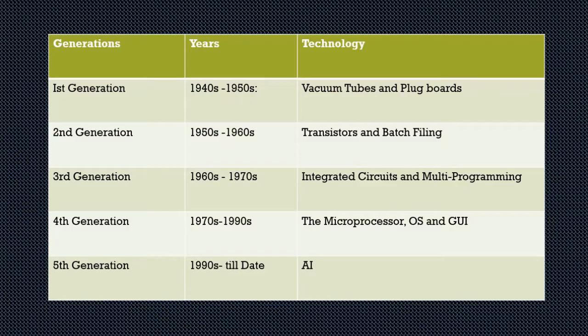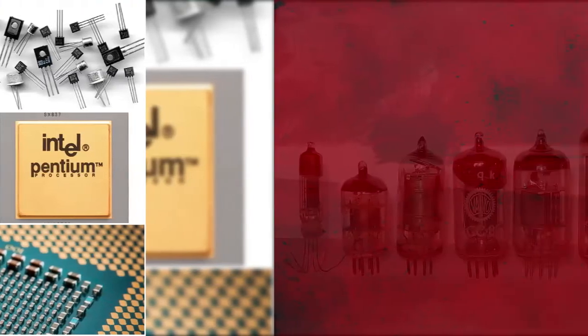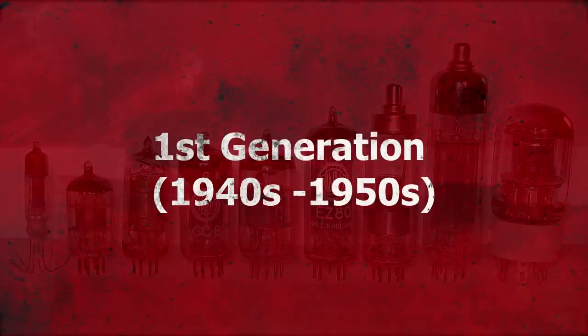The first generation computers used vacuum tubes. The second generation computers used transistors. The third generation computers used integrated circuits. The fourth generation computers used microprocessor chips. The fifth generation computers unveiled smart devices capable of artificial intelligence.